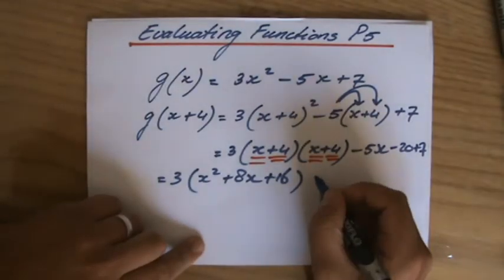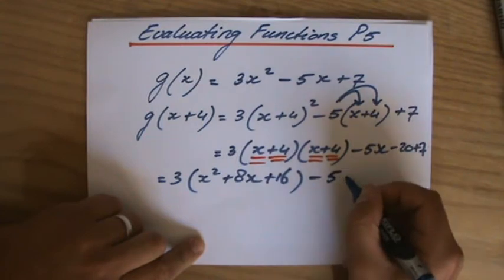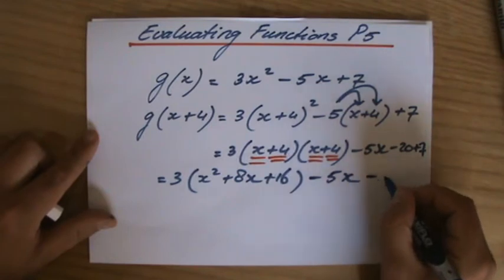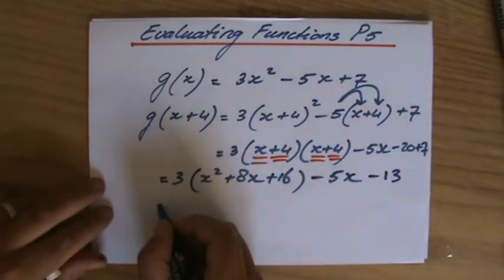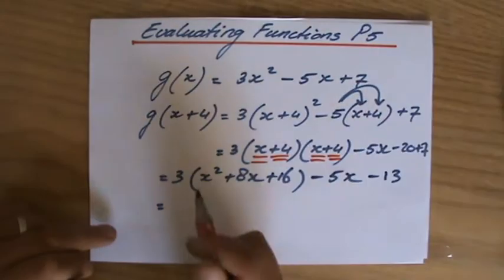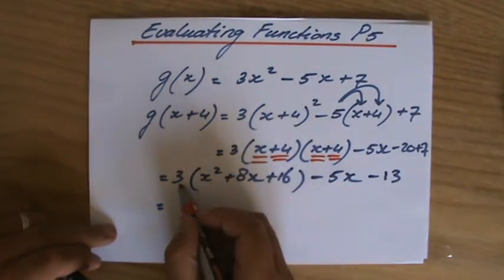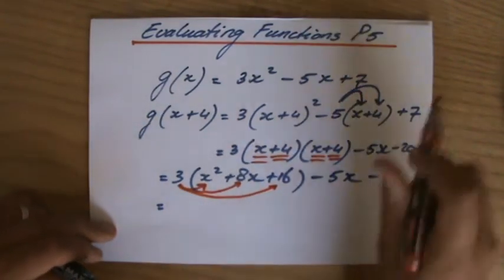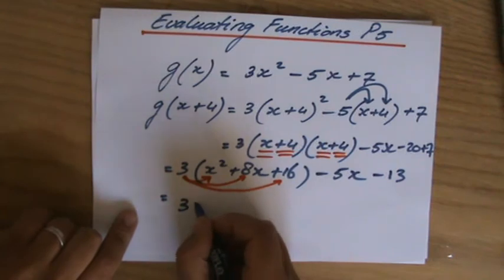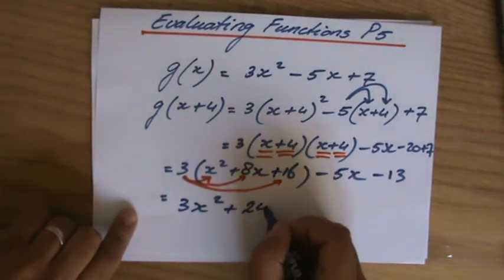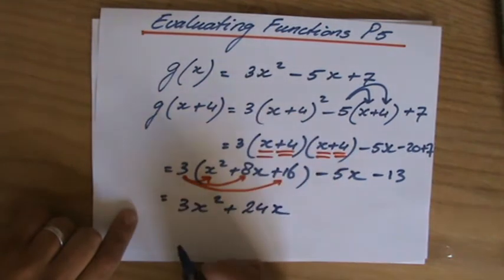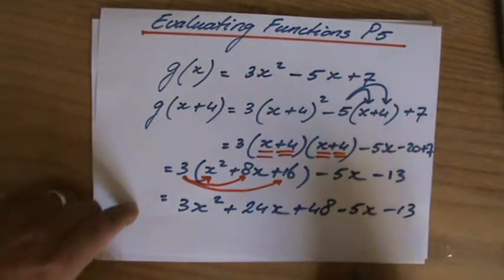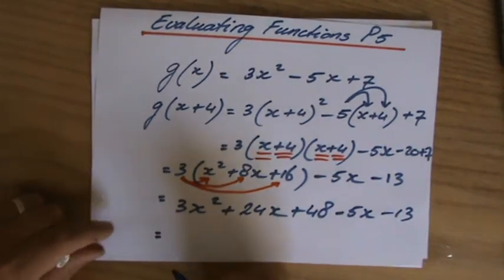Now we have the rest of the function: minus 5x. And let's simplify minus 20 plus 7, which is minus 13. I have to do 3 now times every term inside those brackets. So 3 times x squared, 3 times 8x, and 3 times 16. That is 3x squared plus 24x. 3 times 16 is 48. Minus 5x minus 13.